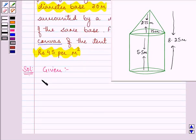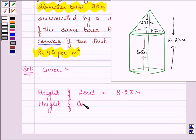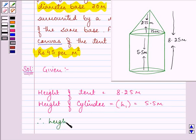Here we are given the height of the tent as 8.25 meters. Height of the cylinder is 5.5 meters, therefore height of the cone H₂ will be 8.25 minus 5.5, which gives us the answer as 2.75 meters.